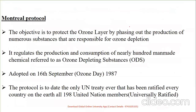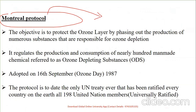Now, the Montreal Protocol — the keyword here is the ozone layer. The objective is to protect the ozone layer by phasing out numerous substances responsible for its depletion. It regulates the production and consumption of man-made chemicals referred to as ozone-depleting substances. It was adopted on 16th September 1987, also called Ozone Day. It is the only United Nations treaty ratified by all 198 UN members — universally ratified.